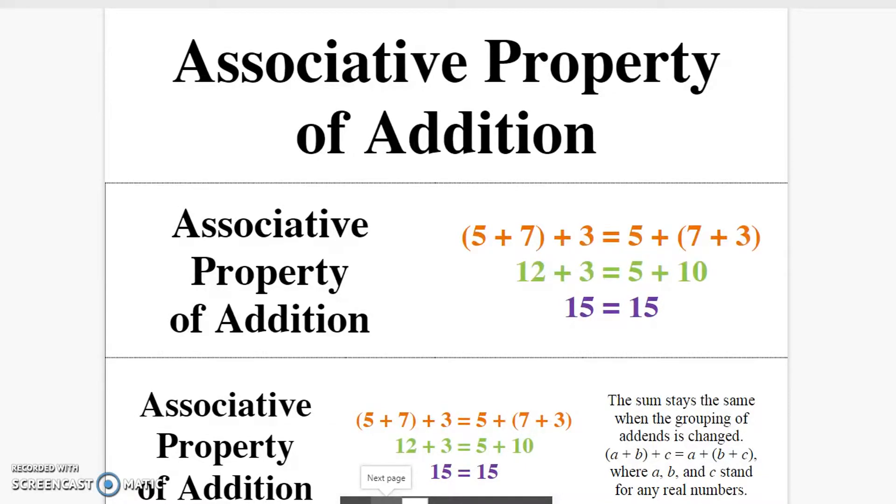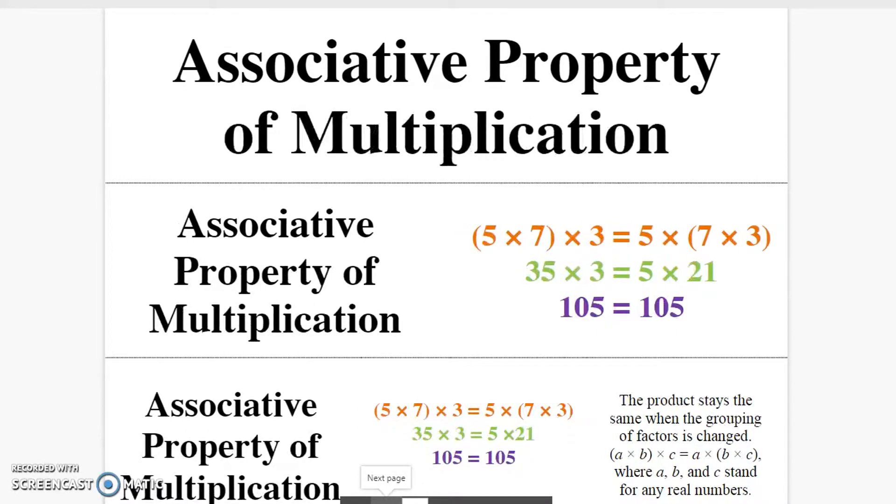Associative property of addition. The sum stays the same when the grouping of addends is changed. Associative property of multiplication. The product stays the same when the grouping of factors is changed.